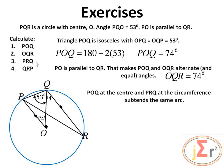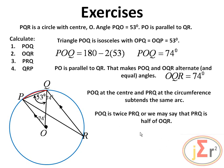To find angle PRQ: angles POQ at the center and PRQ at the circumference are subtended by the same arc. The angle at the center is twice the one at the circumference, so PRQ = 74° ÷ 2 = 37 degrees.